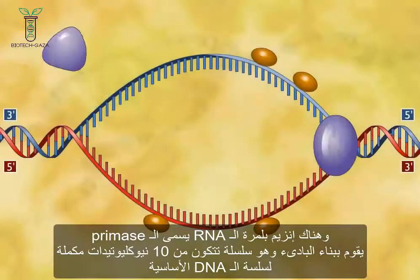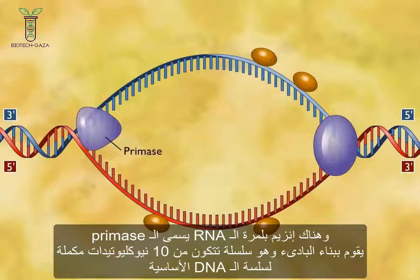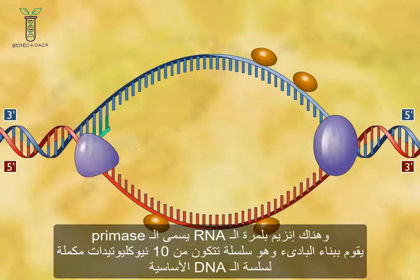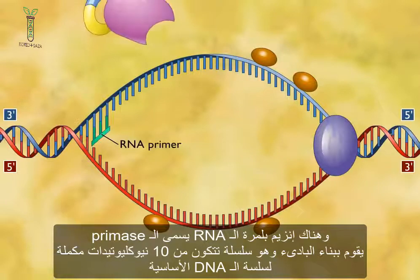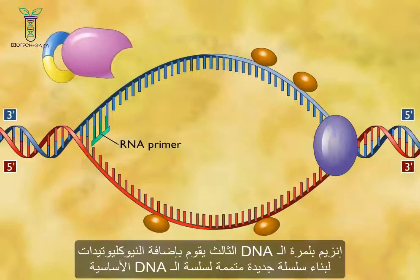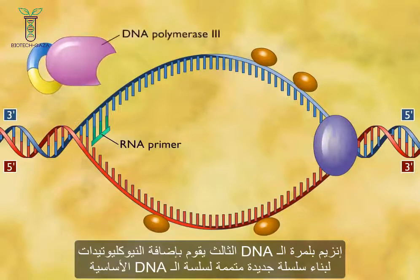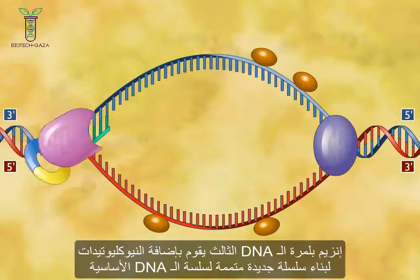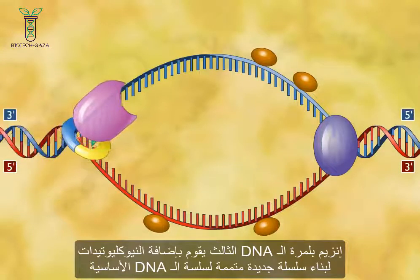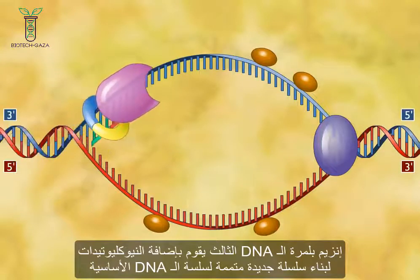Therefore, an RNA polymerase called a primase constructs an RNA primer, a sequence of about 10 nucleotides complementary to the parent DNA. DNA polymerase 3 can then add deoxyribonucleotides to synthesize the new complementary strand of DNA.